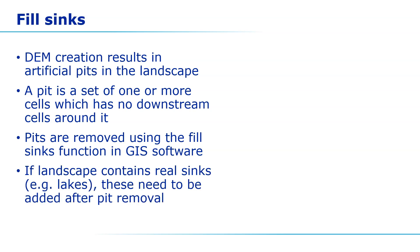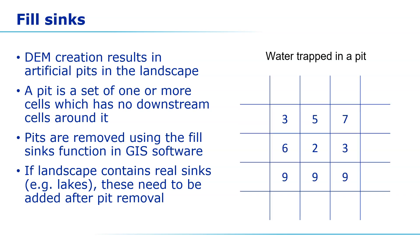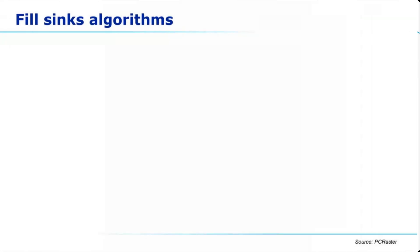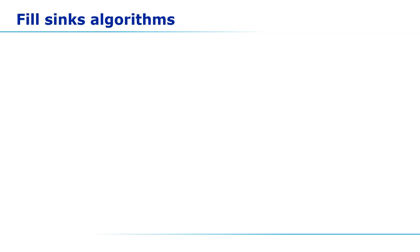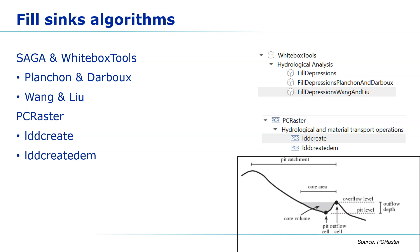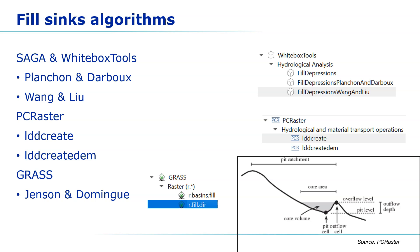The pits are removed using fill sinks algorithms. However, if the landscape contains real sinks such as lakes or wetlands, these need to be added back after pit removal. Algorithms can remove pits by filling up the pit or by cutting through the pit. For filling sinks there are many algorithms available from different processing providers — you'll likely need to test different options to get the best results for your study area. Saga and Whitebox Tools use algorithms from Planchon & Darboux and Wang & Liu. PCRaster has the lddcreate algorithm which uses an approach where you can control the filling with different parameters — it results in a flow direction raster, and if you want the filled DEM you need to use lddcreate DEM. GRASS offers the Jenson and Domingue algorithm.